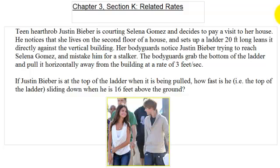Teen heartthrob Justin Bieber is courting Selena Gomez and decides to pay visits to her house. He notices that she lives on the second floor and sets up a ladder 20 feet long, leaning it directly against the vertical building. Her bodyguards notice Justin Bieber trying to reach Selena Gomez and mistake him for a stalker. The bodyguards grab the bottom of the ladder and pull it horizontally away from the building at a rate of 3 feet per second. Justin Bieber is at the top of the ladder when it is being pulled. How fast is he — i.e., the top of the ladder — sliding down when he is 16 feet above the ground?